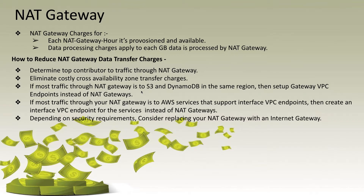Once your NAT gateways are provisioned and available, they will start charging — there's no way to reduce that hourly cost other than deleting them. Depending on your security requirements, consider replacing your NAT gateway with an Internet gateway. By using security groups, you can keep your subnet private so no one from outside can access it. If you can use the Internet gateway for patching or other work, try to use Internet gateway instead of NAT gateway and eliminate those hourly charges.